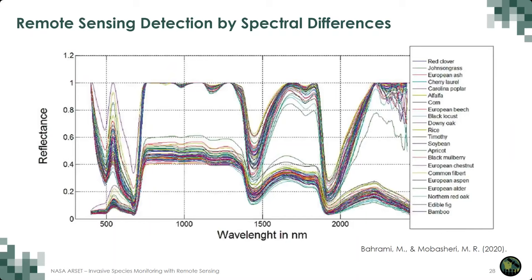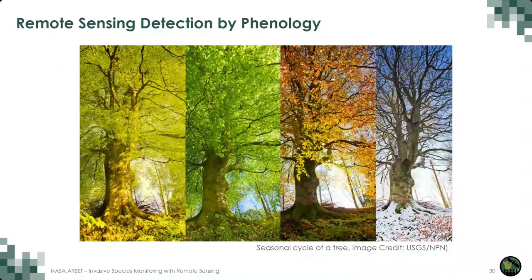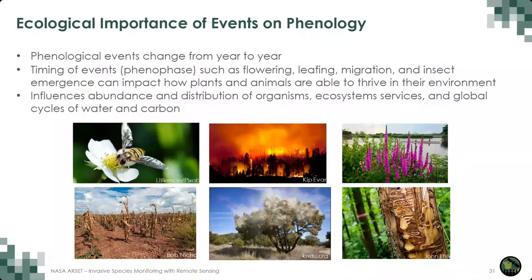So how can we use remote sensing for invasive species detection? There are two primary ways used to determine invasive plant species. One is to focus on the spectral differences of species — spectral differences allow us to differentiate between surfaces through a process called classification, and with enough information it's sometimes possible to tell the difference between species of plants. Another methodology is to use the natural annual cycle of recurrent events, such as the seasonal cycle of a tree known as phenology. Phenological events include flowering, leafing, migration, and insect emergence, which can impact how plants and animals are able to thrive in their environment.